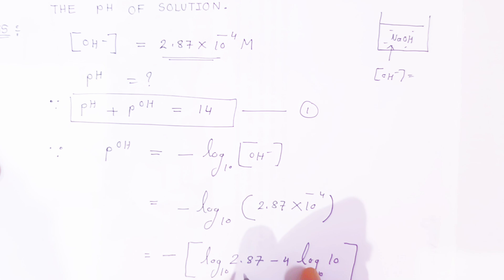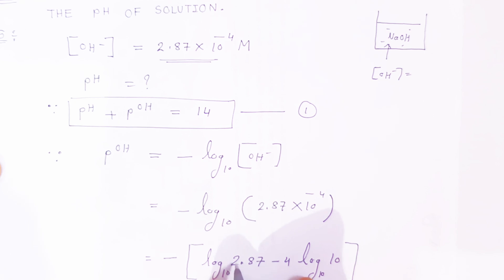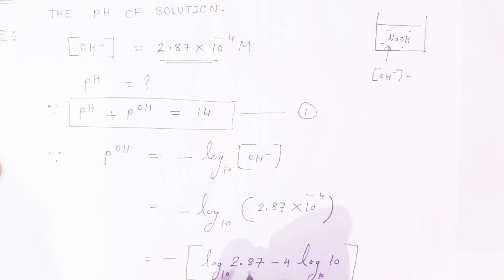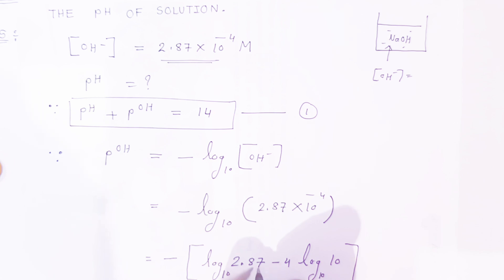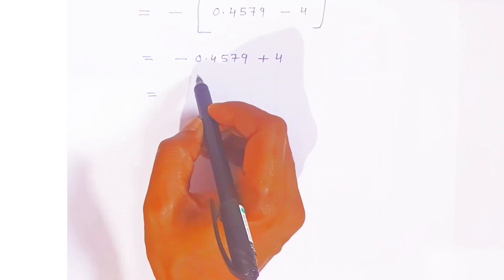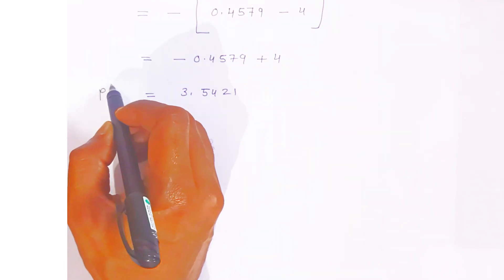With the help of the log table, when you find the value — when you take the log of 2.87, the characteristic: before the decimal there is 1 digit, so 1 minus 1 will be 0. Write down the characteristic as 0. Then go to the 28th row and see the 7th column in the log table — you will find the mantissa is 0.4579. So with the minus going inside, the quantity becomes minus 0.4579, and minus 4 becomes plus 4, giving pOH = 3.5421.